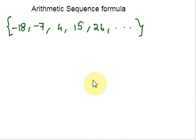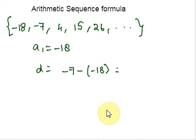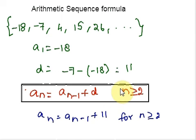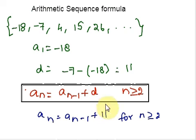Let us apply the two steps. The first term is given as negative 18. The common difference can be found by subtracting the first term from the second term. The second term is negative 7 and the first term is negative 18, so the difference is positive 11. All we have to do is substitute the initial term A1 and the common difference D into the recursive formula. Replace D by 11. This is the recursive formula for the arithmetic sequence given in this example. You can graph the sequence — your graph should show the growth pattern with a constant difference of 11 units.